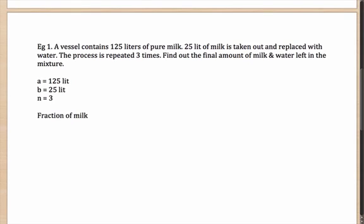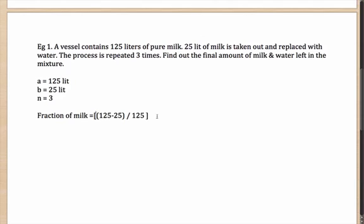So the fraction of milk left in the mixture after three repetitions is (A minus B) divided by A, that is (125 minus 25) divided by 125, the whole thing to the power of 3 — because N was three times. This gives you 100 divided by 125, which simplifies to (4 by 5) cubed, and that comes out as 64 by 125.